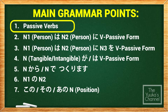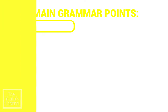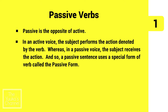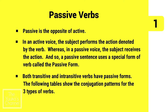Passive verbs. Passive is the opposite of active. In an active voice, the subject performs the action denoted by the verb, whereas in a passive voice, the subject receives the action. A passive sentence uses a special form of verb called the passive form. Both transitive and intransitive verbs have passive forms.